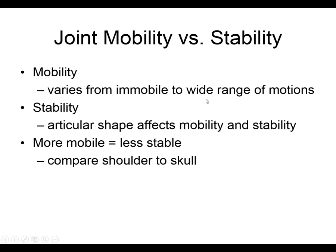Mobility refers to the range of motion — wide range or not much motion, like the sutures or your teeth. Stability is affected by the shape of the joint, the ligaments, and the muscles intended to stabilize it. The more mobile the joint, the less stable. You can compare the shoulder to your skull — you never hear of someone dislocating their skull bones, but you hear a lot about people dislocating their shoulder.